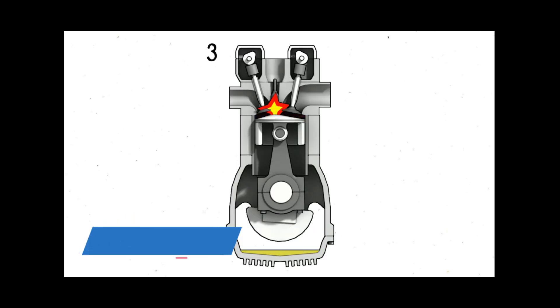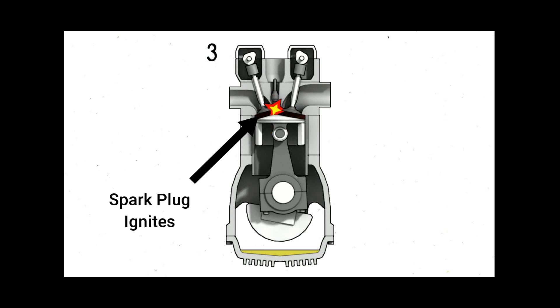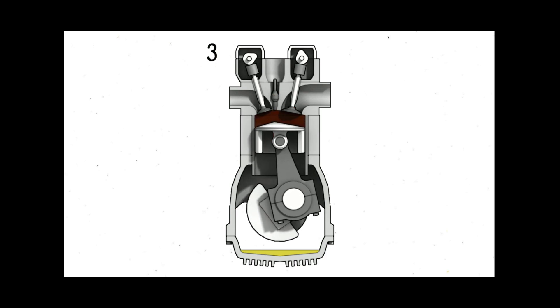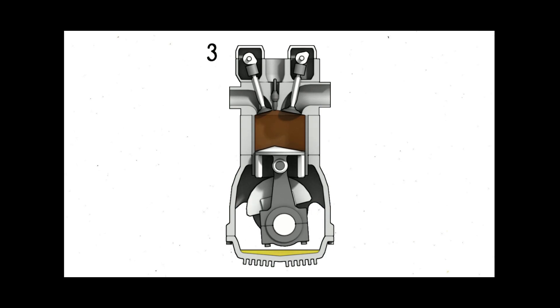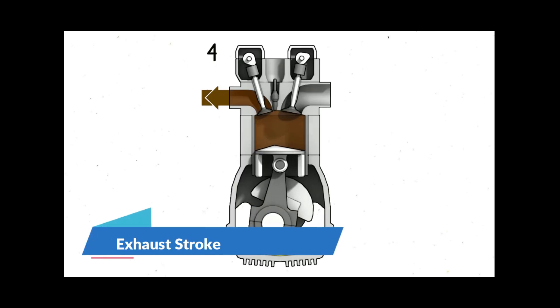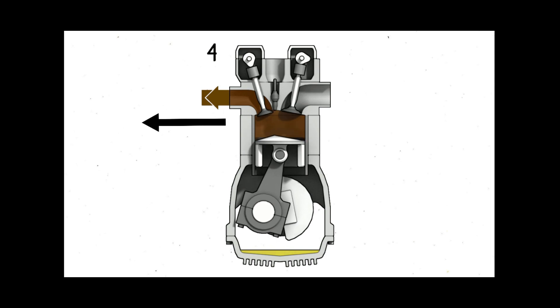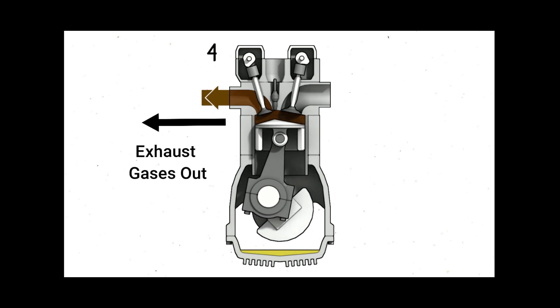In the power stroke, a spark plug ignites the compressed fuel-air mixture to create a small explosion. The process is repeated continuously when the engine is running. In the exhaust stroke, the waste fumes produced by the explosion in each cylinder are expelled through the vehicle's exhaust system.